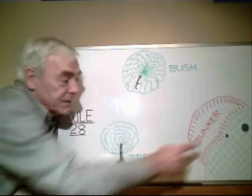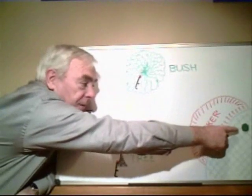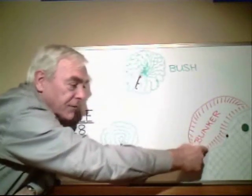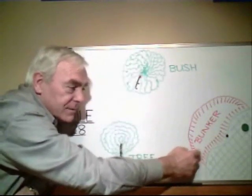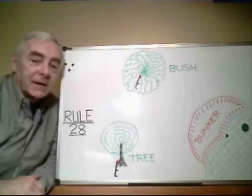The third option then is to take a line from the flagstick through the ball and drop a ball, but the line stops at the bunker. He has to drop the ball in the bunker.